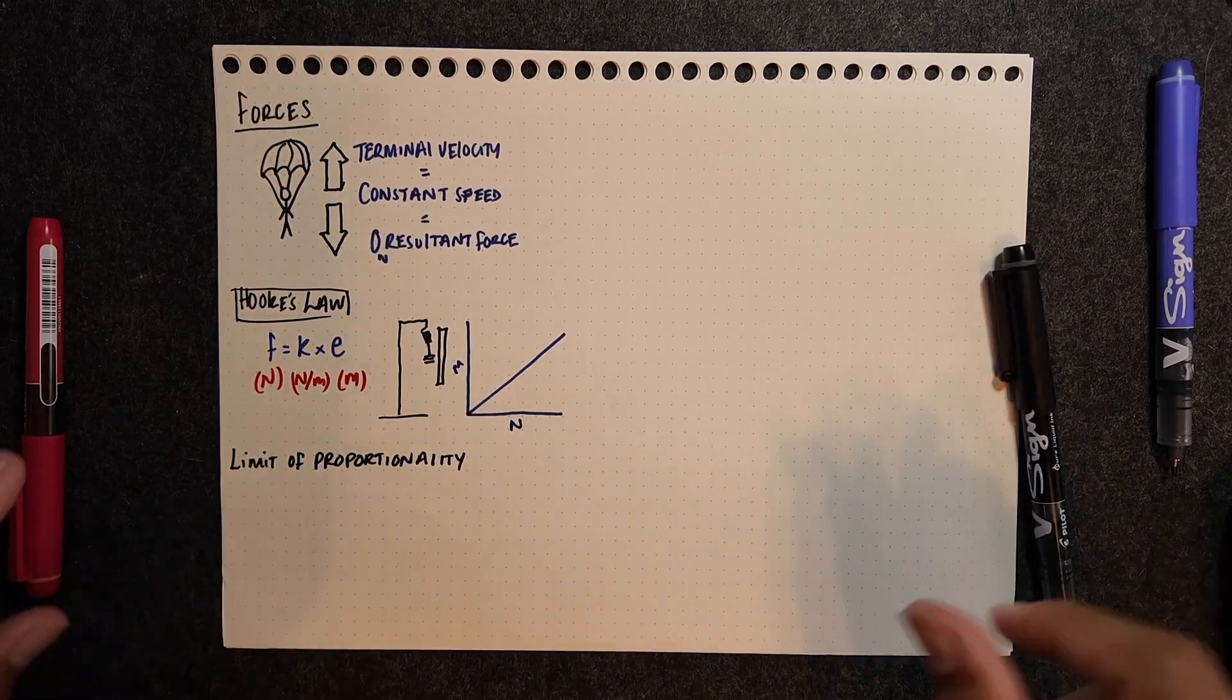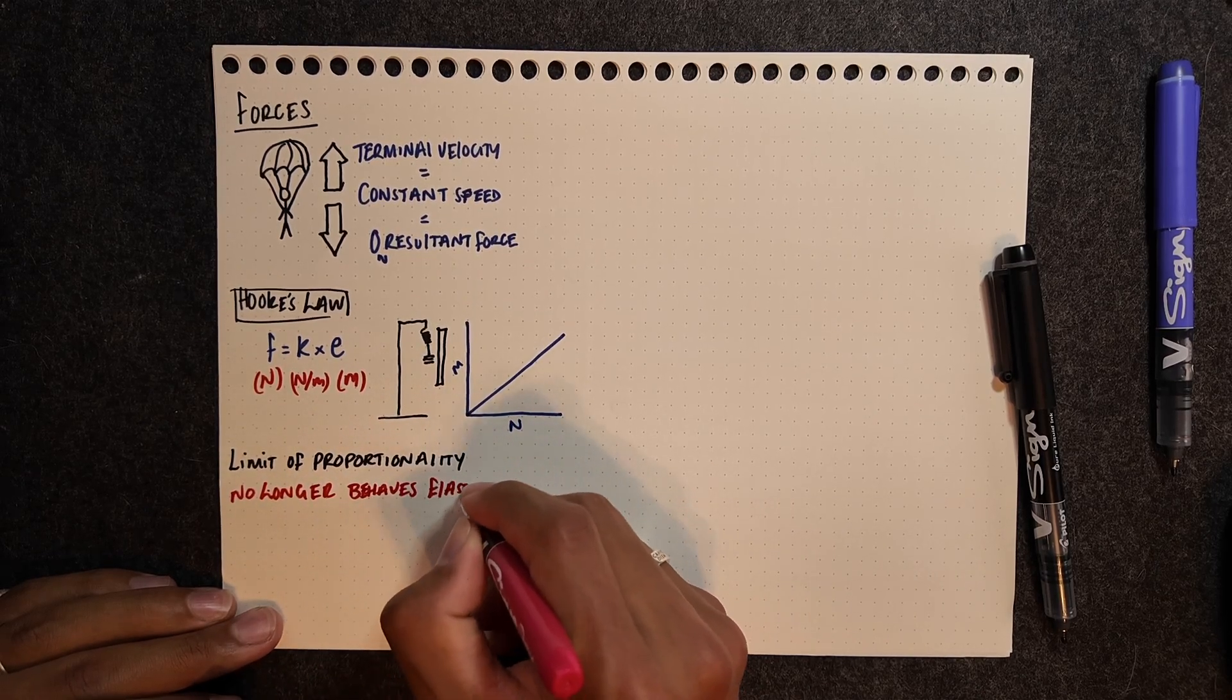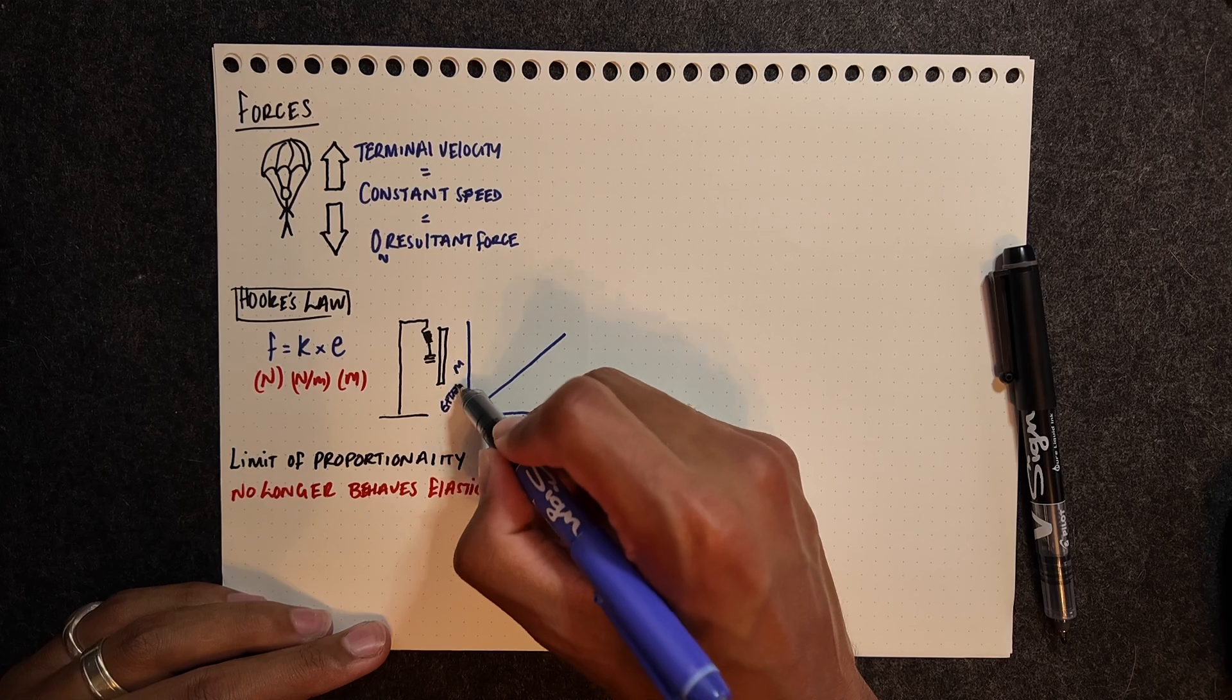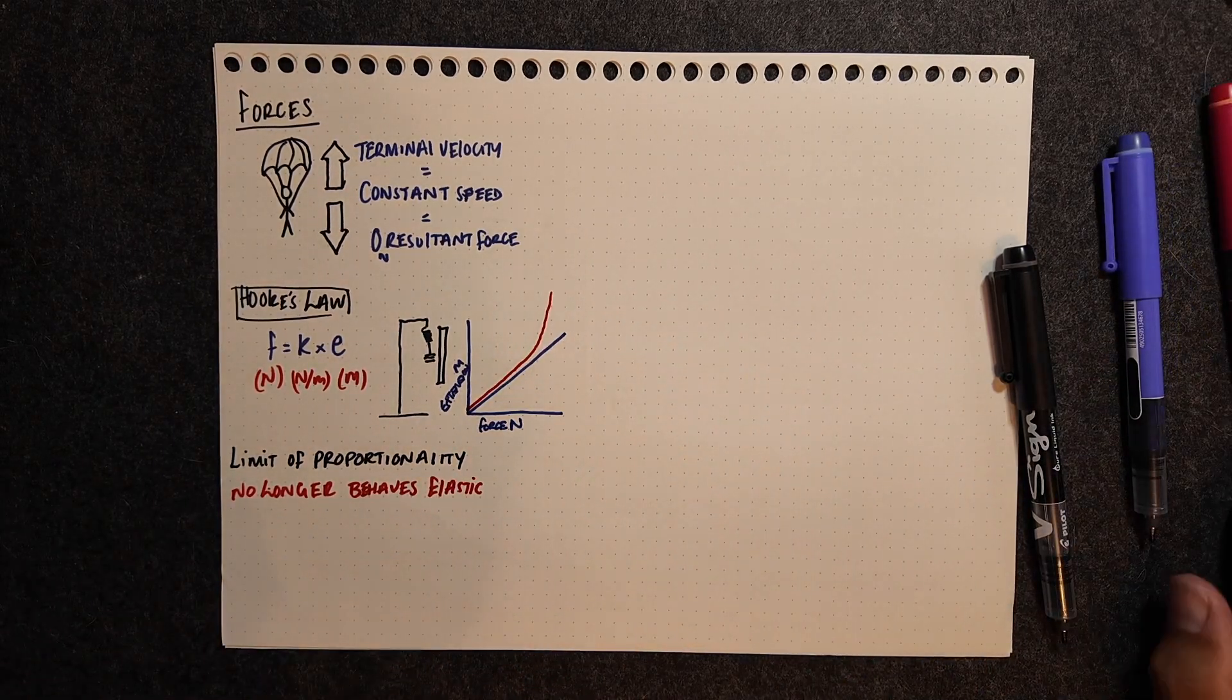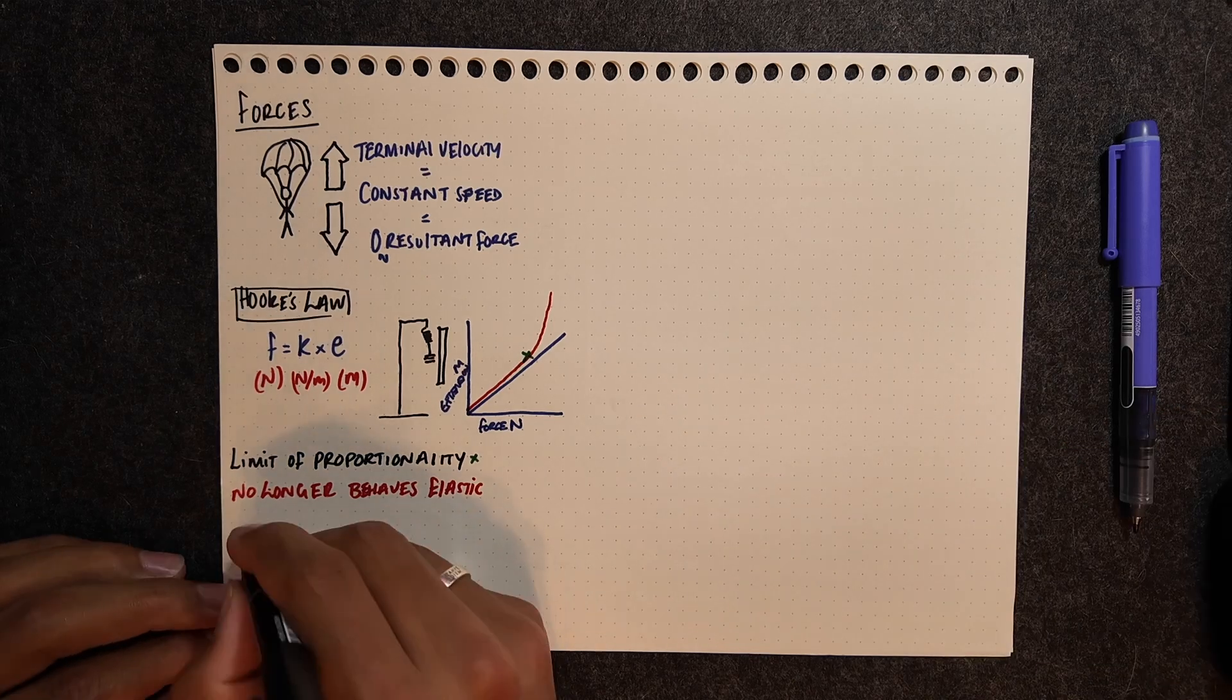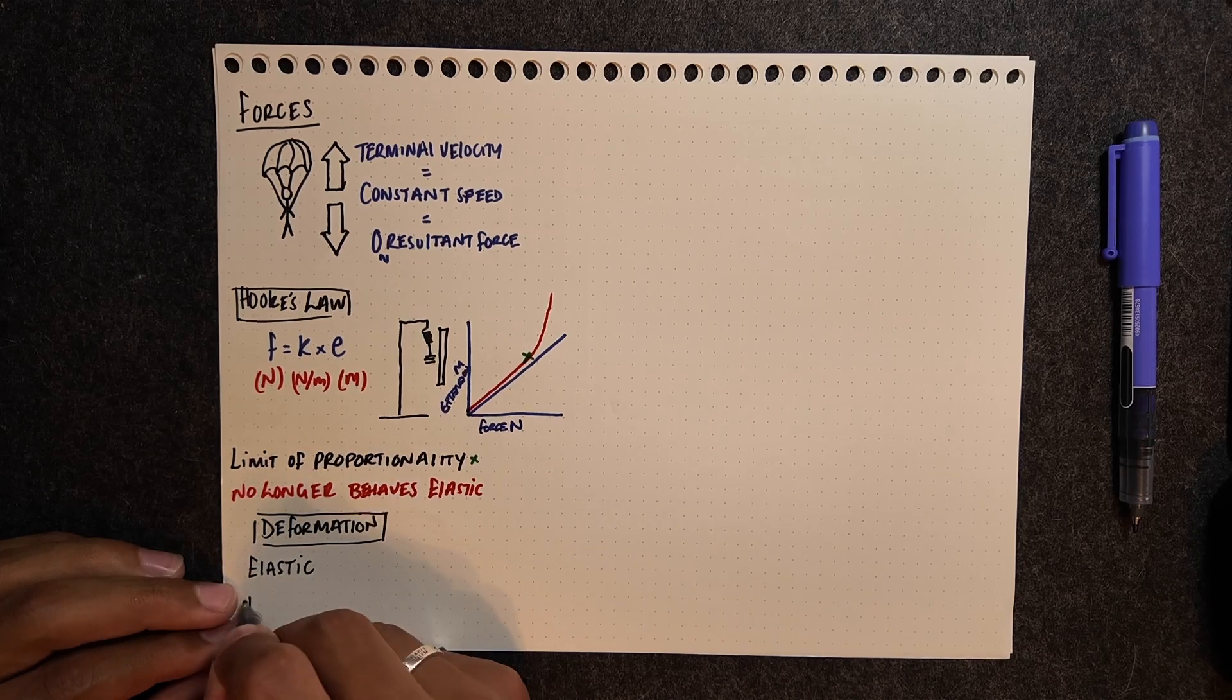With most springs, there will be a limit of proportionality. This is where it will no longer go back to its original shape, and if it can't go back to its original shape, it is no longer behaving in what we call an elastic way. This is shown by that red line there where it's behaving directly proportional. So as I increase the force, it increases the extension, and then the extension increases much, much more, and that's because it's now past that limit of proportionality.